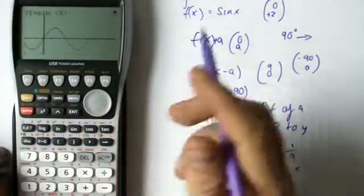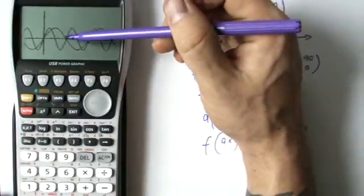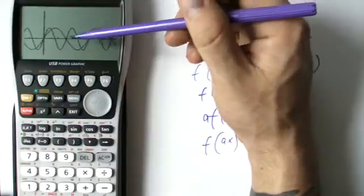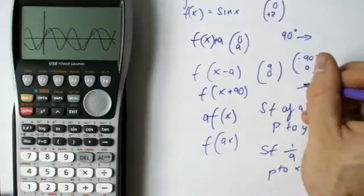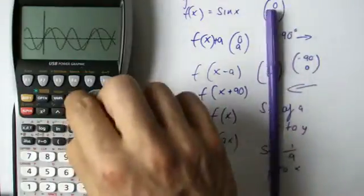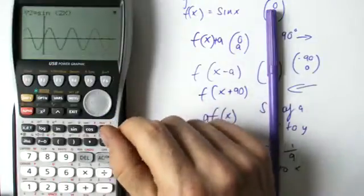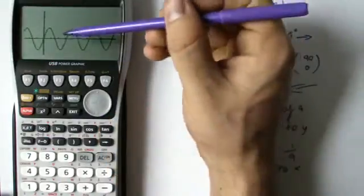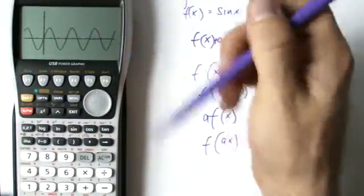There's the original. This is now getting twice as close. So the x coordinates - before it did one full cycle by 360, this is now doing it by 180. So all of those are being scrunched up towards the y-axis. That's what it's looking like. It's getting twice as close. So it's done one full cycle by 180 and another full cycle by 360.